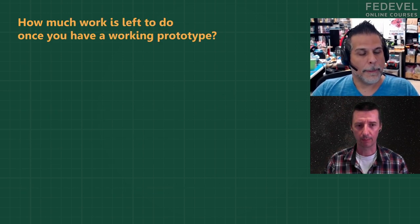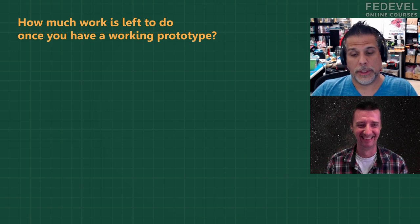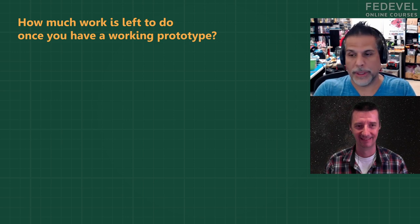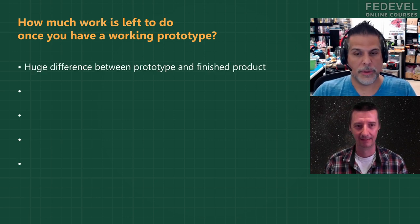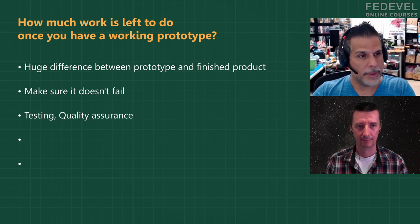Once you have your prototype working, how much work do you still need to do? Is it like 20%, 50%, 80%? Many people think they're almost finished. It depends what the prototype is of. The prototype to the final product you could actually ship to a person can be a huge difference. Having a prototype is great — it's working — but now you have to make sure it's working so that it doesn't fail, you can manufacture it, and you test it. If you get a formal education in electrical or embedded engineering, you'll learn about testing, quality assurance, probability statistics, and cycling a product.